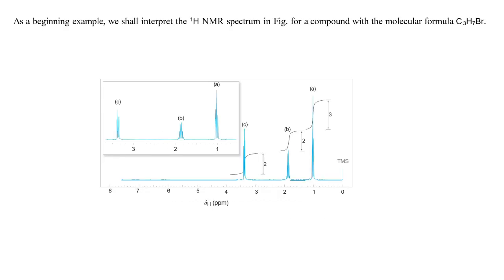As a beginning example, we shall interpret the 1H NMR spectrum seen in the figure for a compound with molecular formula C3H7Br. You can see the spectrum - we have three signals along with TMS. This is appearing you can see: at 1 ppm there is a triplet for three protons. You can see the integration values: three protons, two protons, and two protons. For this triplet we have three protons, for this two protons there will be a sextet, and for these two protons that will also be a triplet.